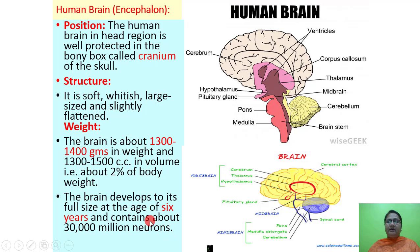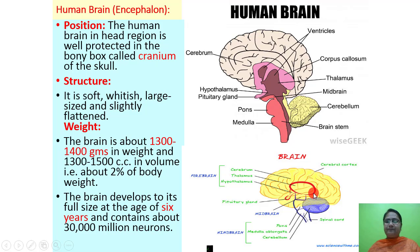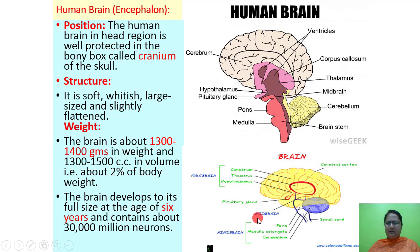The brain is developed at the age of 6 and contains 30,000 million neurons. Here in the figure you can also see the three parts: forebrain, midbrain and hindbrain.